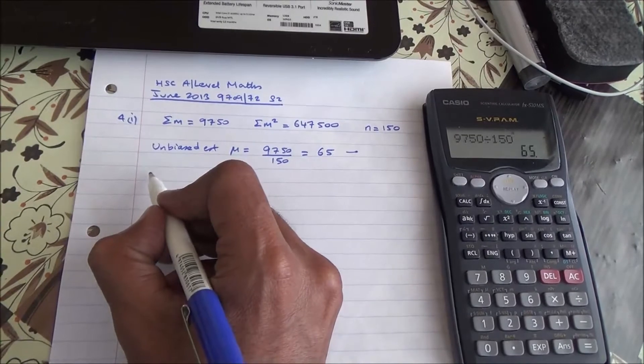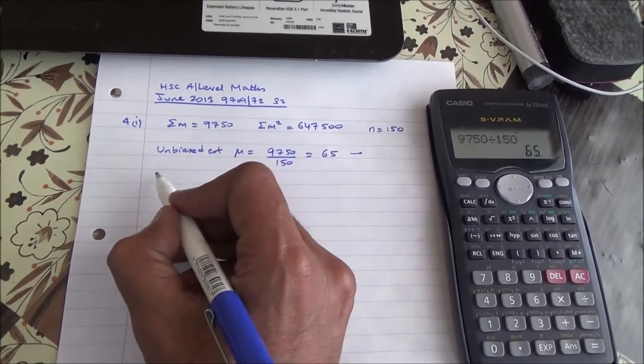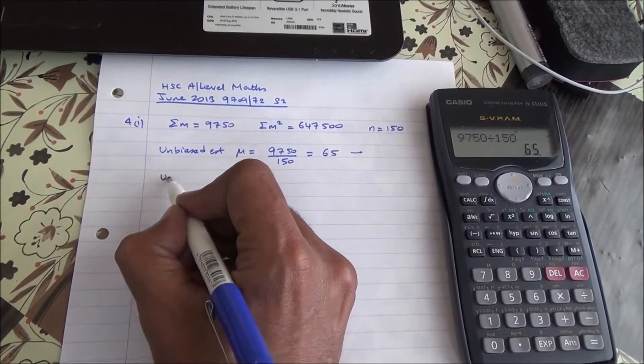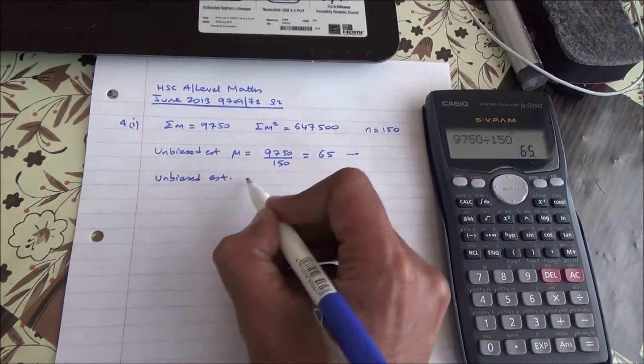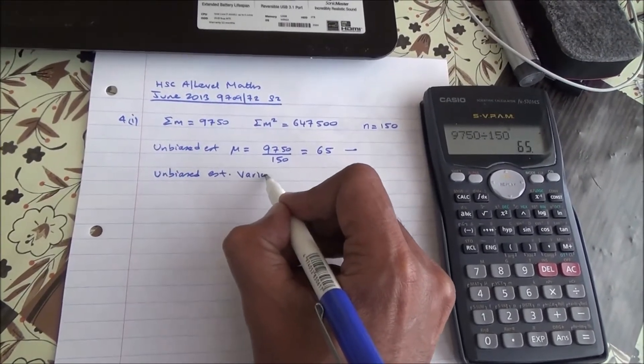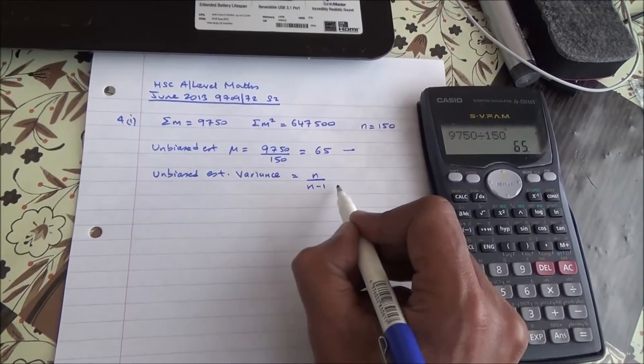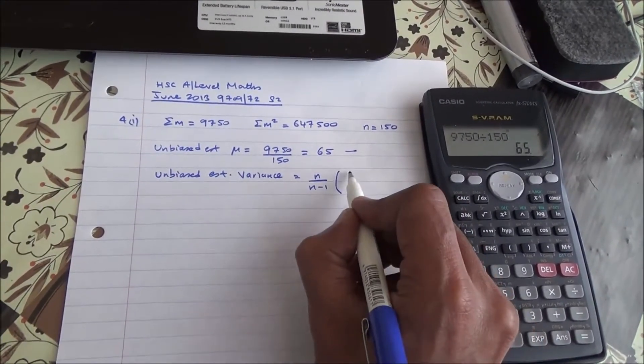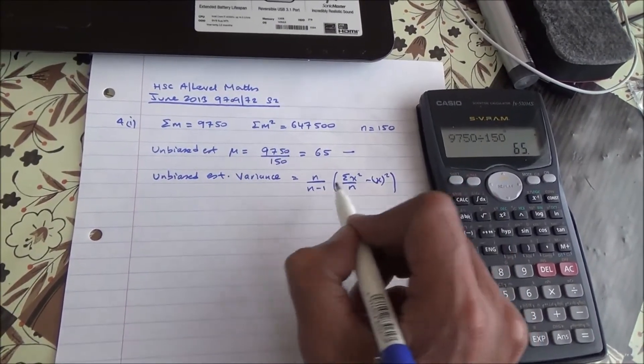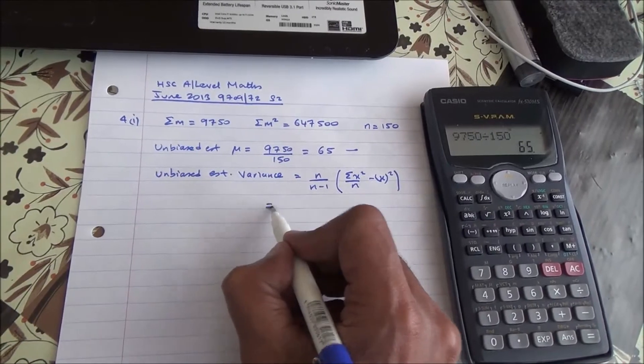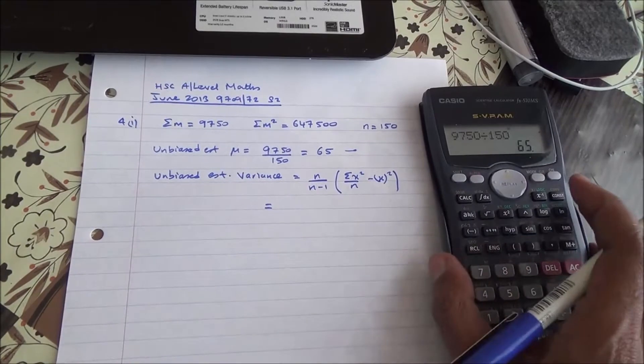For this second part, we need to calculate an unbiased estimate of the variance. To be able to do that, we can use n over n minus 1 times the summation of x square over n minus the mean to the square.